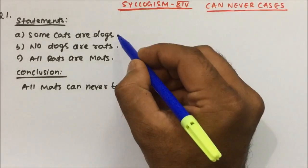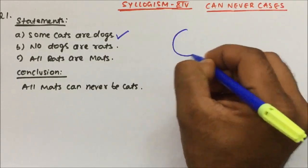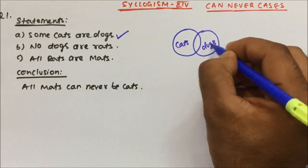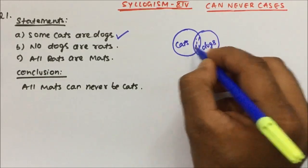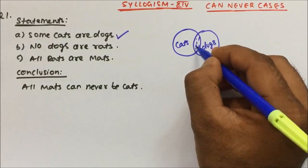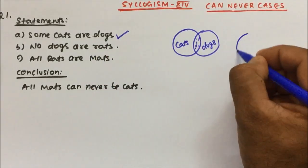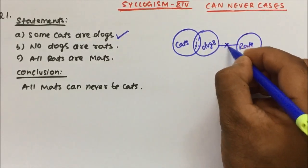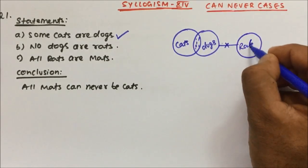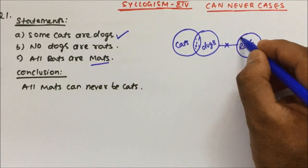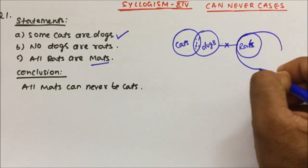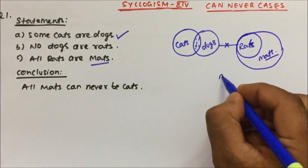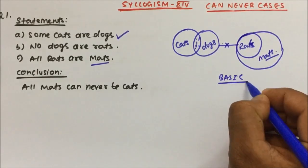So what is the statement? Statement is: some cats are dogs. I'll draw the Venn diagram for that. See, the cats and dogs are sharing this portion — some cats are dogs and some dogs are cats, both will be true. And no dogs are rats, so dog and rat have no relation. And all rats are mats, so all those rats are inside mats. This is my basic Venn diagram for the given statement.